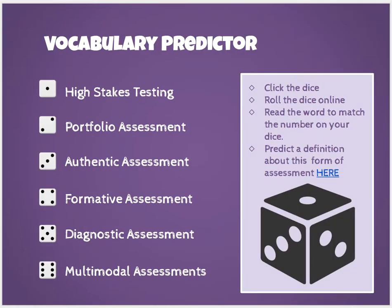Then we move on to a vocabulary predictor activity. I want you to click on the die and roll it online and read the number to match the number on the die. So if you roll a 4, you're going to predict the definition of formative assessment. If you roll a 1, you'll predict high-stakes assessment, and so on. Click here on our Padlet board to put your prediction. Pay attention to these words because they will be important vocabulary words and headlines this week.